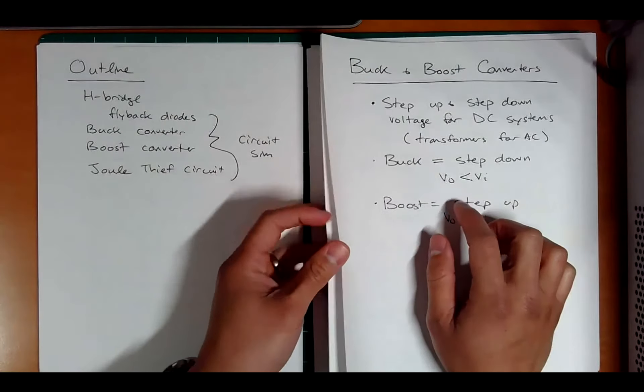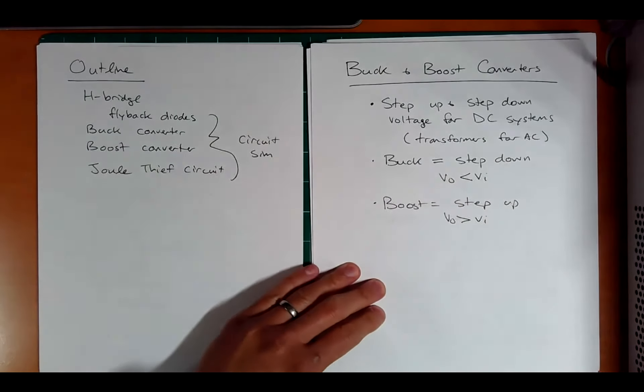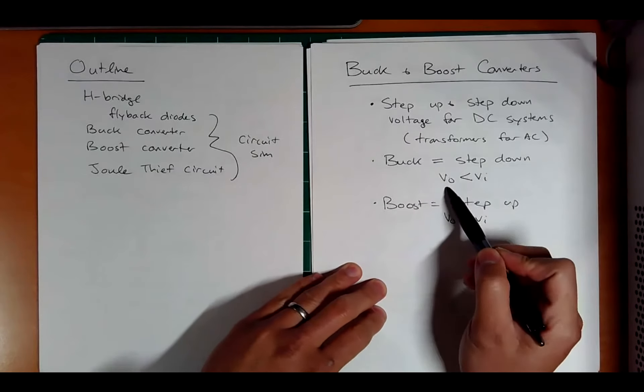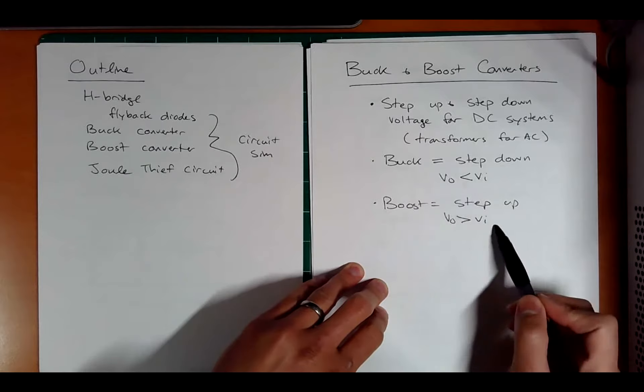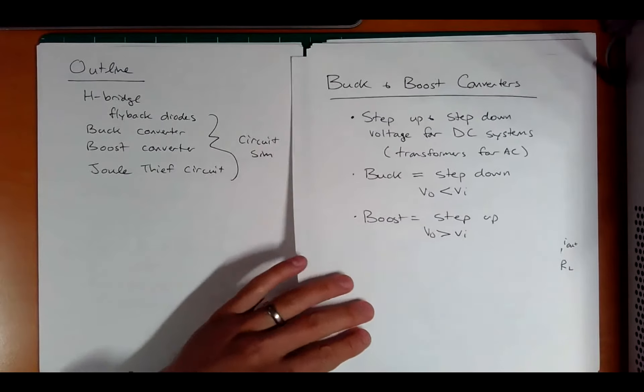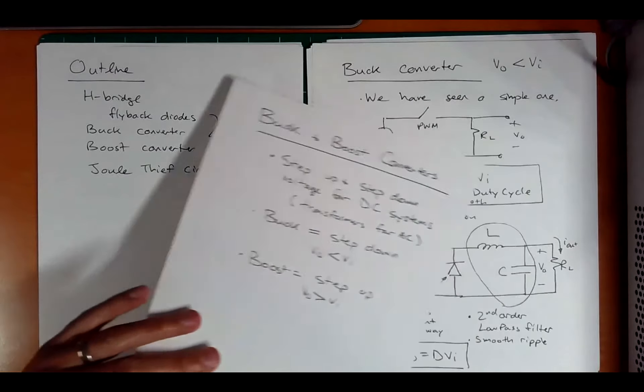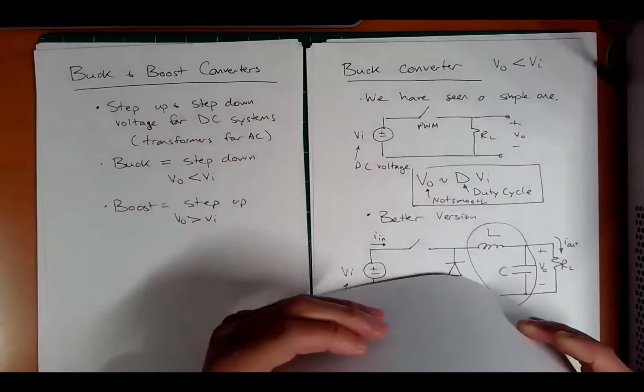Now we can use our nice transistor technology and still incorporate capacitors, inductors, and diodes. So let's talk about these two things. A buck converter steps down DC voltage, so the output is less than the input, and a boost converter does a step up voltage and current.